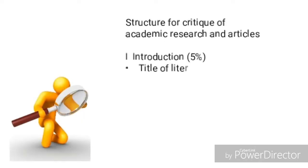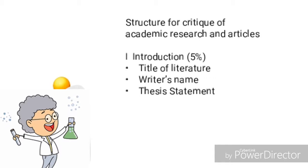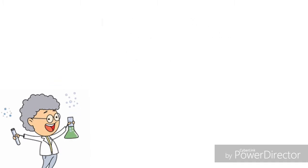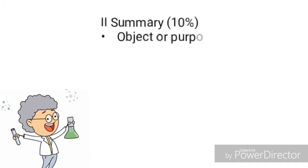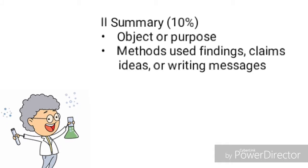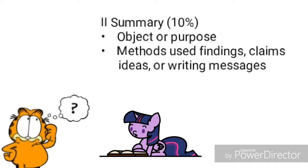Review. First, Introduction 5%: Title of Literature, Writer's Name, Thesis Statement. Second, Summary 10%: Object or Purpose, Methods, Use, Findings, Claims, Ideas, or Writing Messages.